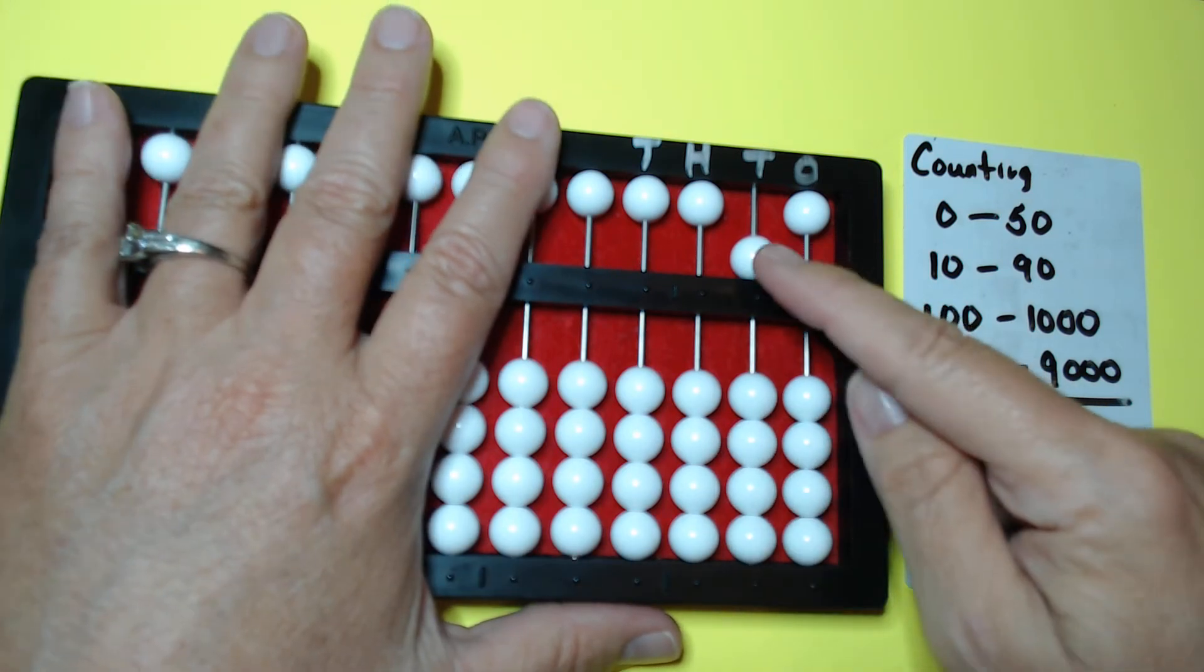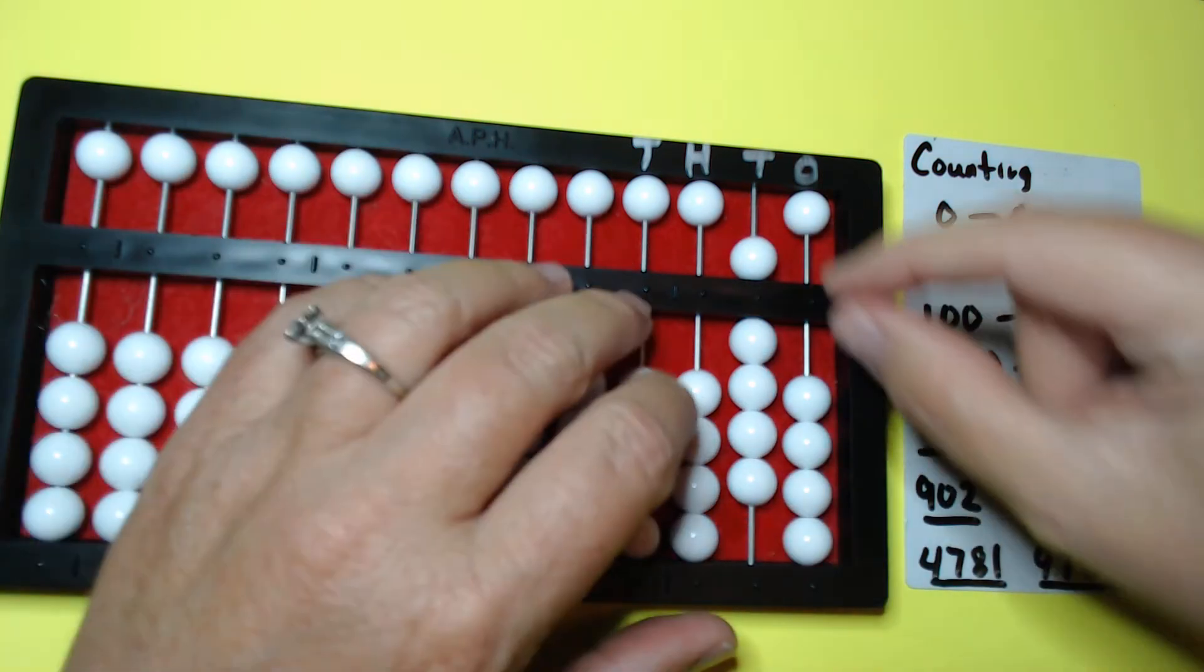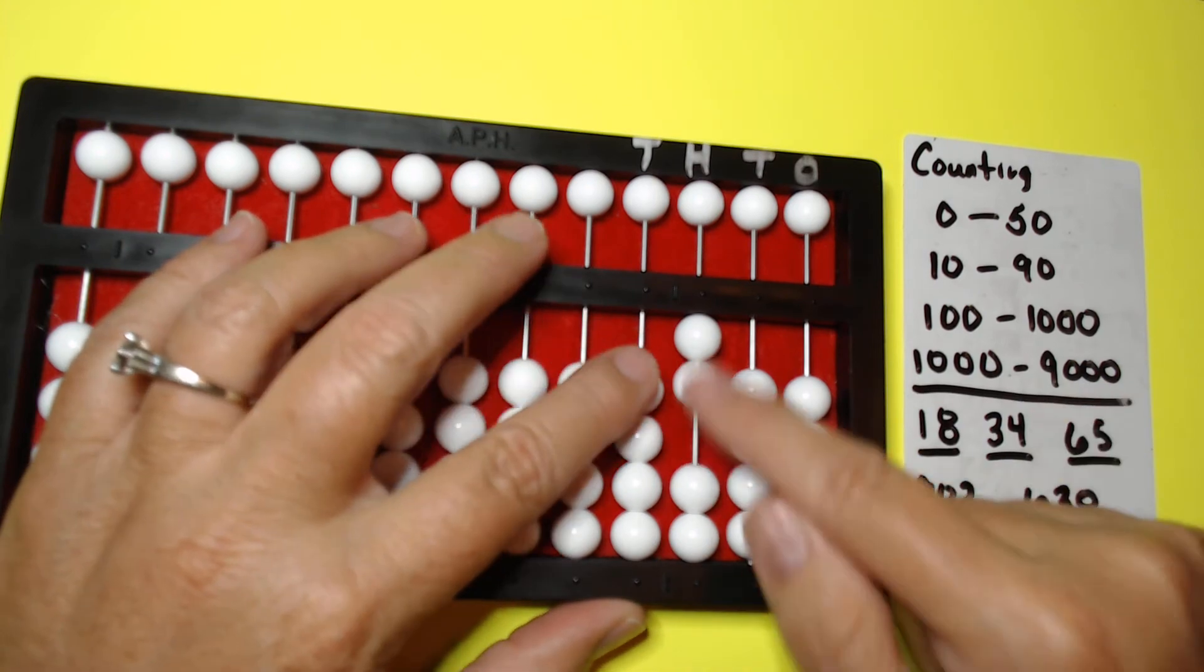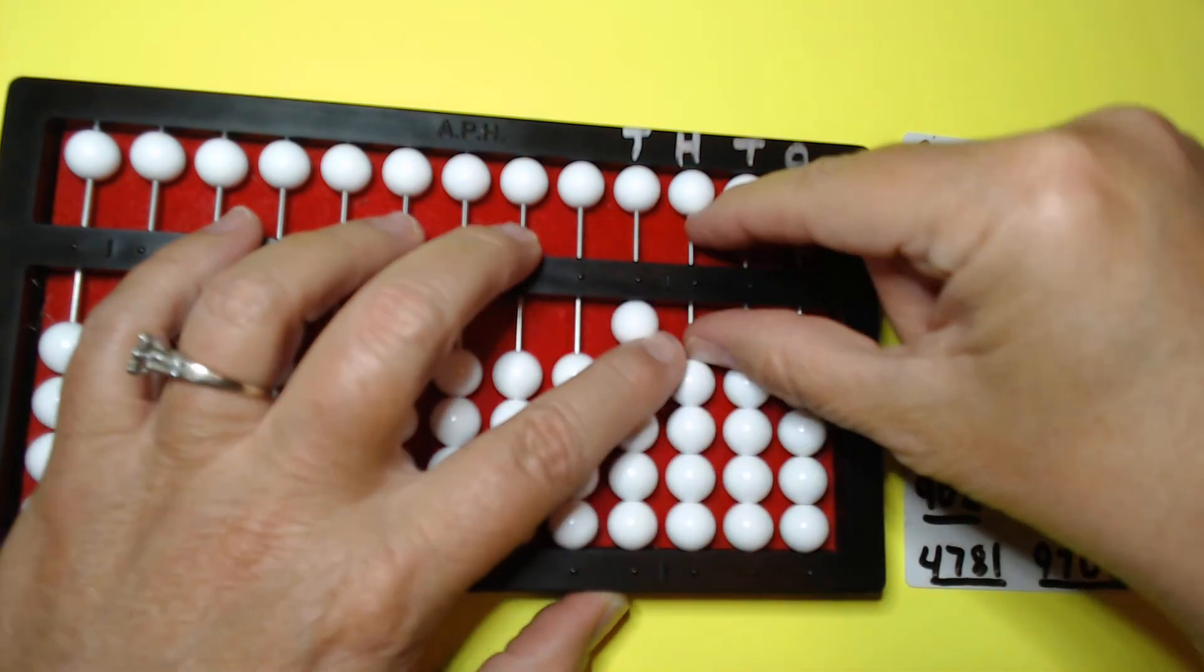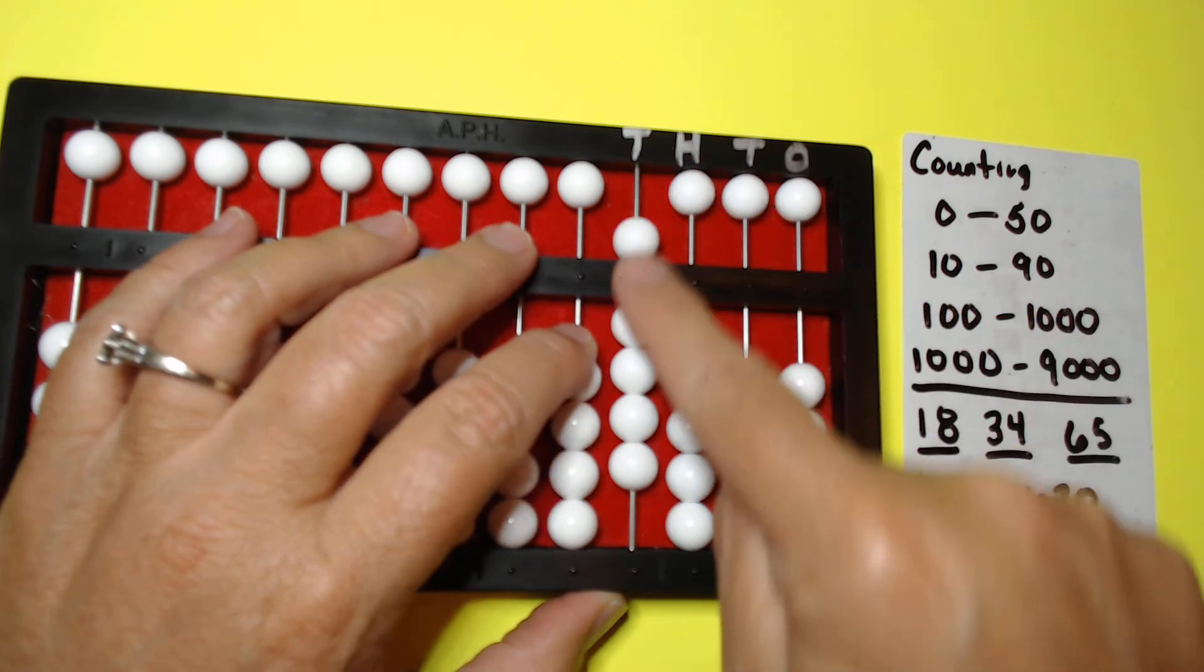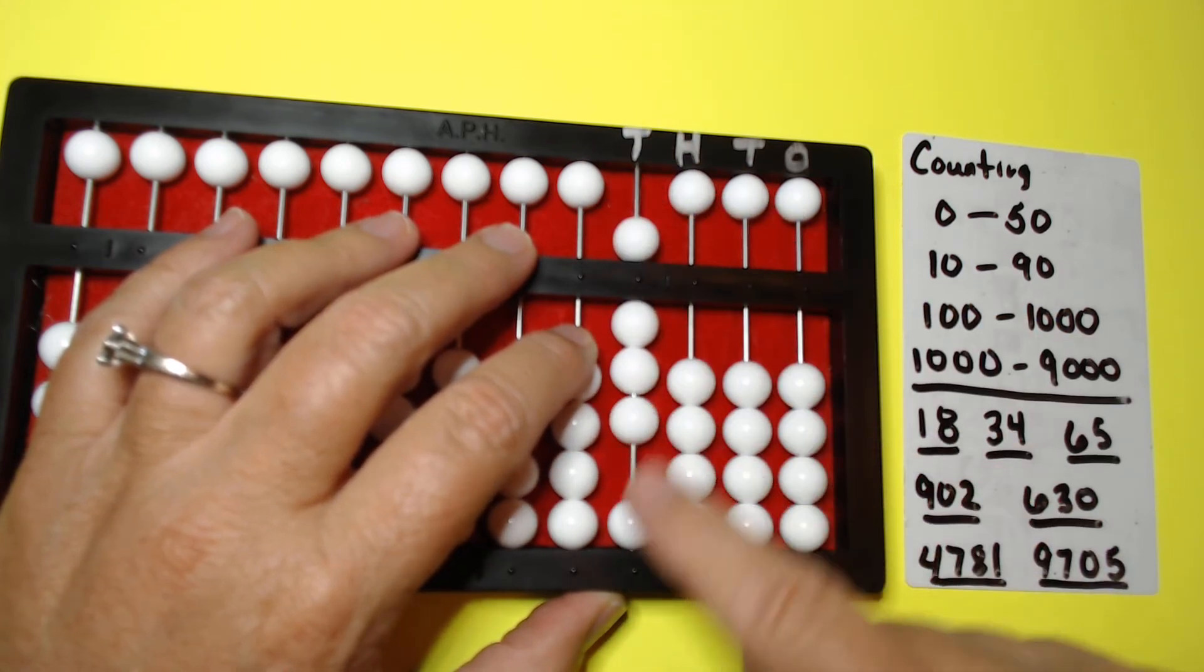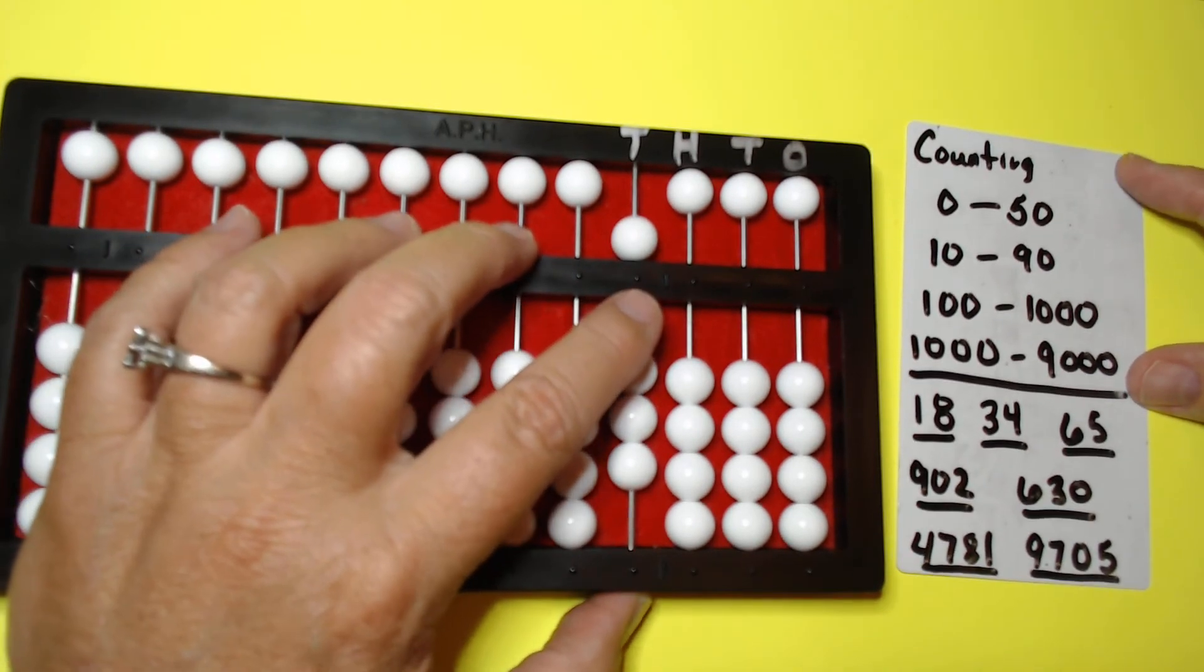And then we can keep counting. So fifty, sixty, seventy, eighty, ninety. We are out. One hundred. Two hundred, three hundred, four hundred, five hundred, six hundred, seven hundred, eight hundred, nine hundred, one thousand, two thousand, three thousand, four thousand, five thousand, six thousand, seven thousand, eight thousand, nine thousand. And ladies and gentlemen, we just did this much of the card.